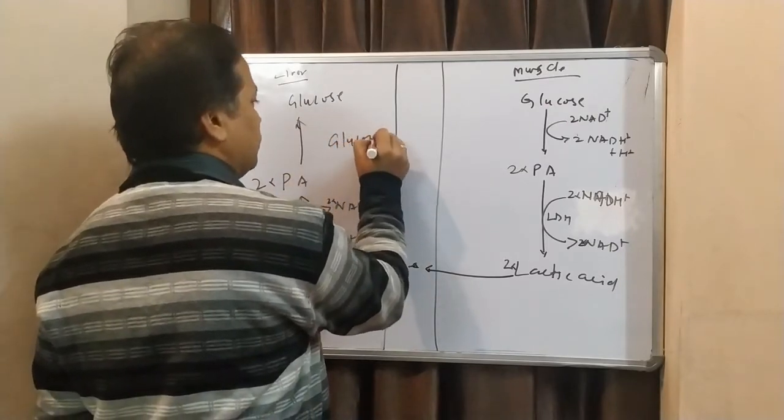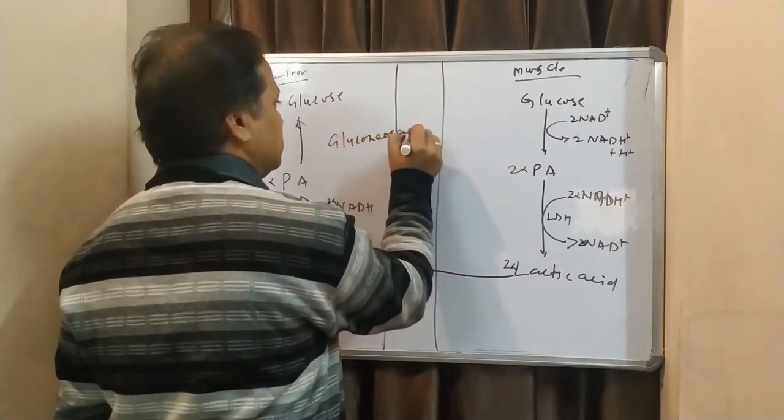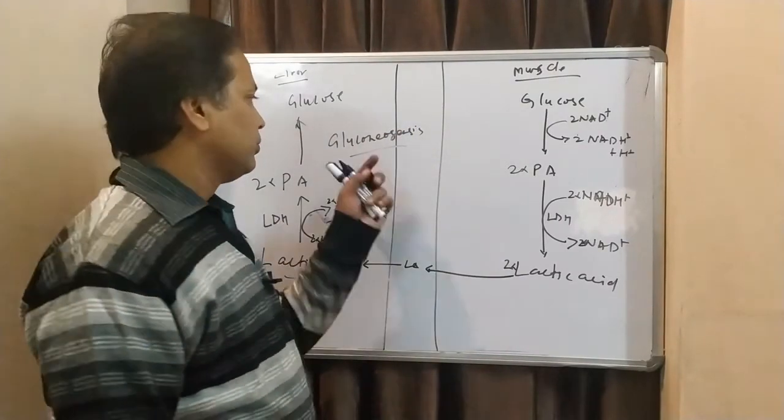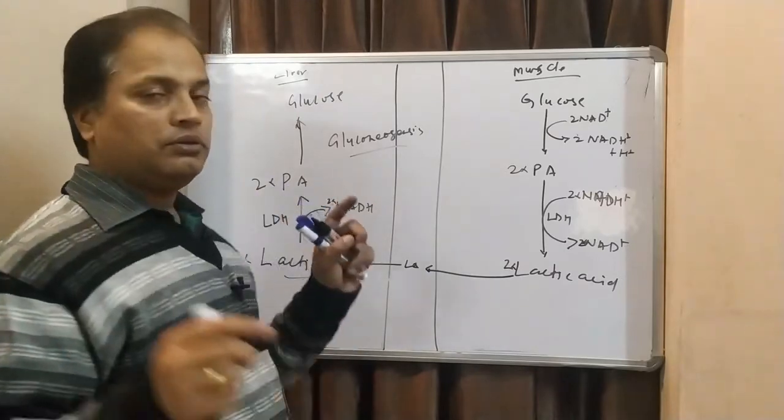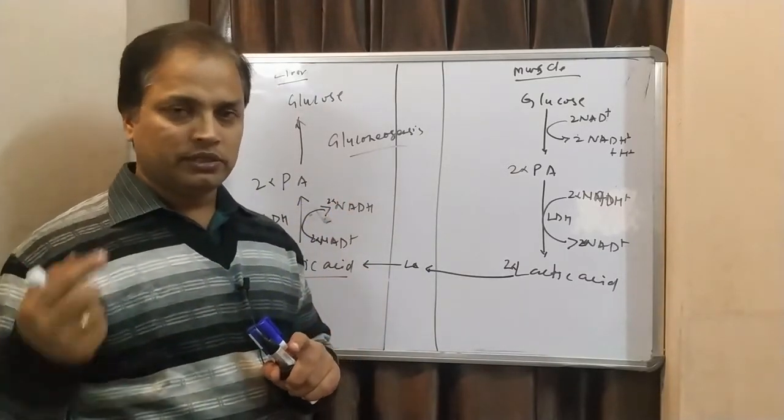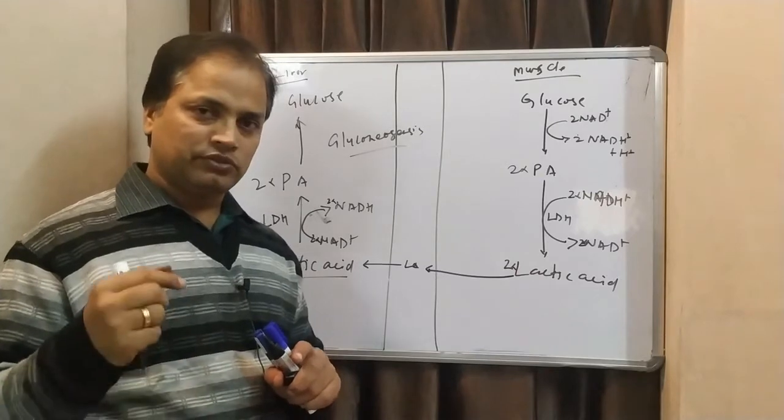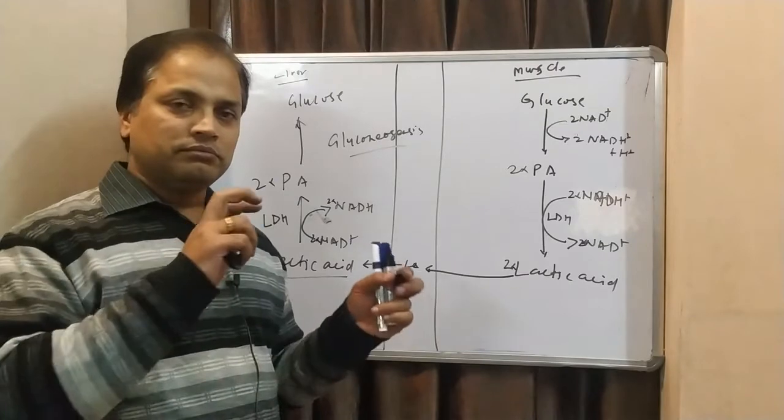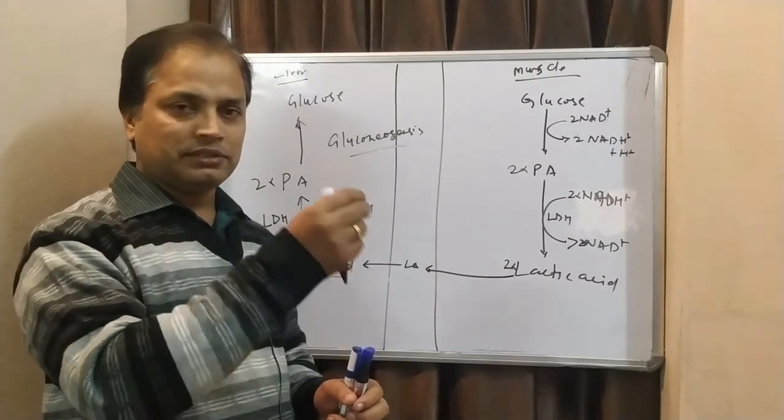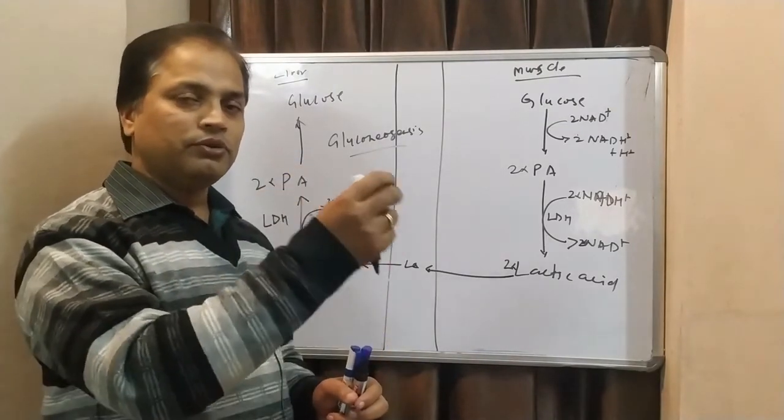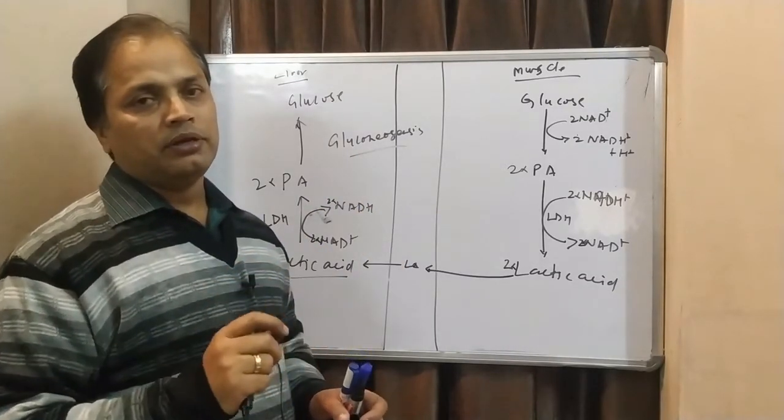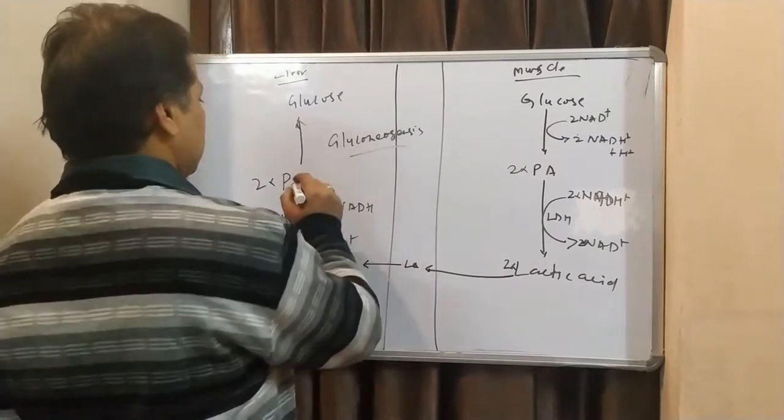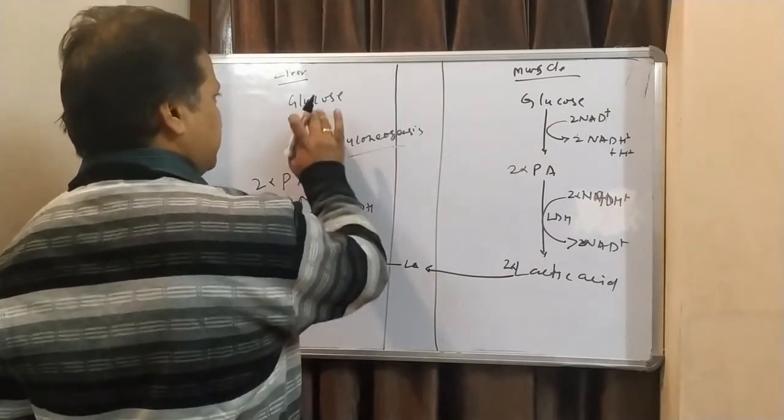By normal gluconeogenesis, just now we have seen in the previous lecture of gluconeogenesis, pyruvic acid goes into the mitochondria. They are converted into oxaloacetate, oxaloacetate to malate. Malate will come out in the mitochondria. Then, that malate will be converted to oxaloacetate. Oxaloacetate will be converted into phosphoenolpyruvate by PEP carboxykinase. And that PEP will be converted back to glucose.